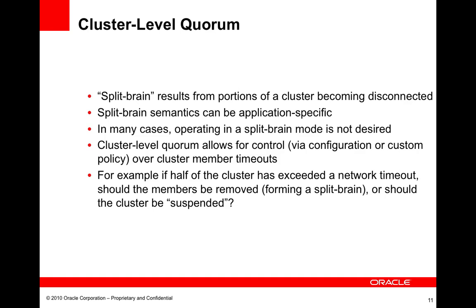Historically we have this problem called split brain. Split brain is not so much a problem — it's a state that you can end up in if portions of your cluster become disconnected from one another due to, say, a network failure. If we have a cluster of ten machines over two racks, and the interconnect between the two racks goes down, each machine can still reach the four others on its own rack, but they can't see any of the five machines on the other rack — they've become completely disconnected.